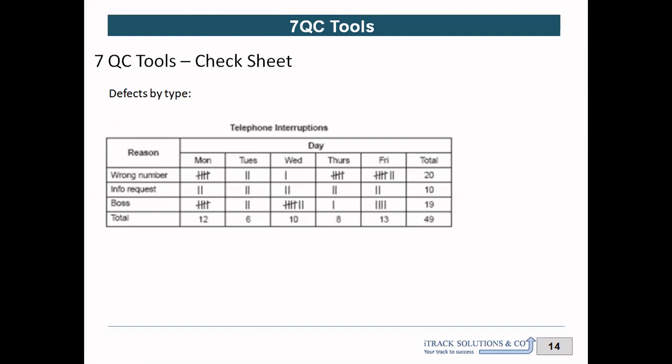You will also be able to identify patterns, which we will explore in another video about stratified analysis — also part of the seven QC tools. For example, you may find more calls from your boss at the beginning of the week and more calls from friends or family towards Thursday and Friday. To understand these trends and root causes changing over time, this kind of check sheet is very useful.